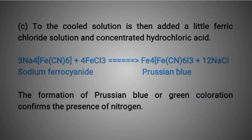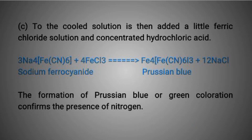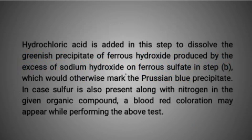Step C: to the cooled solution is then added a little ferric chloride solution and concentrated hydrochloric acid. 3 sodium ferrous cyanide plus 4 ferric chloride react to give iron hexacyanoferrate plus 12 sodium chloride. The formation of Prussian blue or green coloration confirms the presence of nitrogen. Hydrochloric acid is added in this step to dissolve the greenish precipitate of ferrous hydroxide produced by the excess of sodium hydroxide on ferrous sulfate in step B.